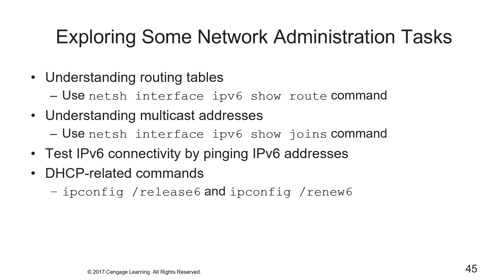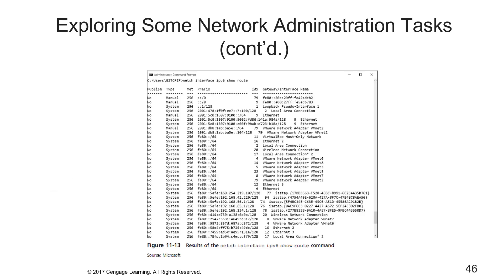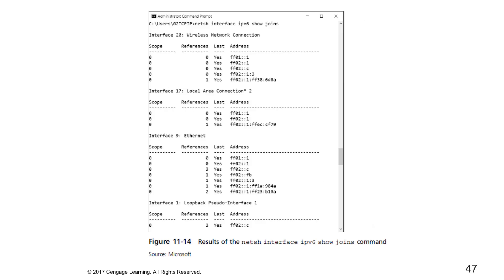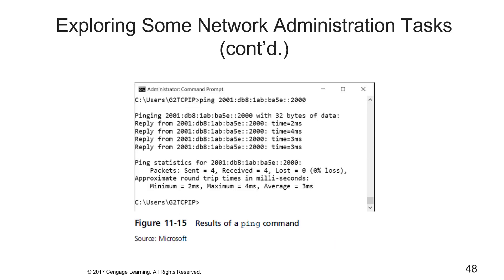For network administration tasks in IPv6: use 'netsh interface ipv6 show route' to view routing tables; use 'netsh interface ipv6 show joins' to look at multicast addresses; test connectivity by pinging IPv6 addresses; and for DHCP, use 'ipconfig /release6' and 'ipconfig /renew6' — the same as IPv4 but with a '6' appended. Here are example results for the show route command, the show joins command, and running ping.